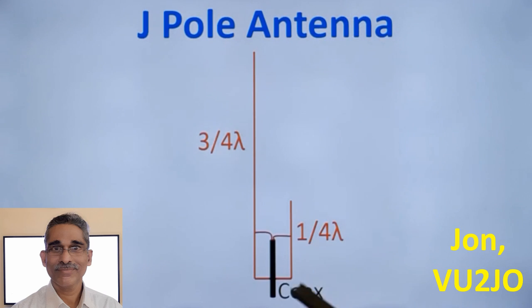J pole antenna is quite popular among radio amateurs for 2m and 70cm bands, the VHF and UHF bands. It consists of two segments.